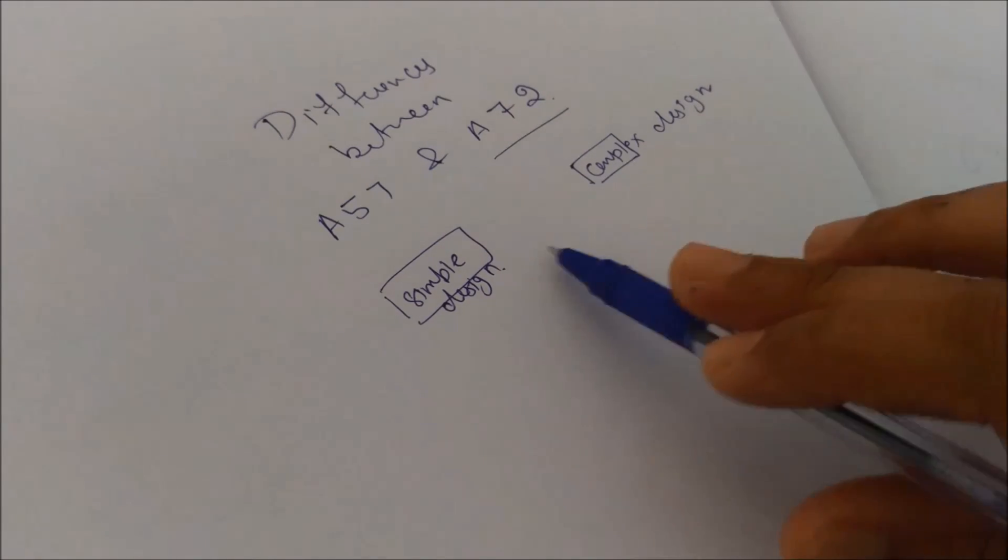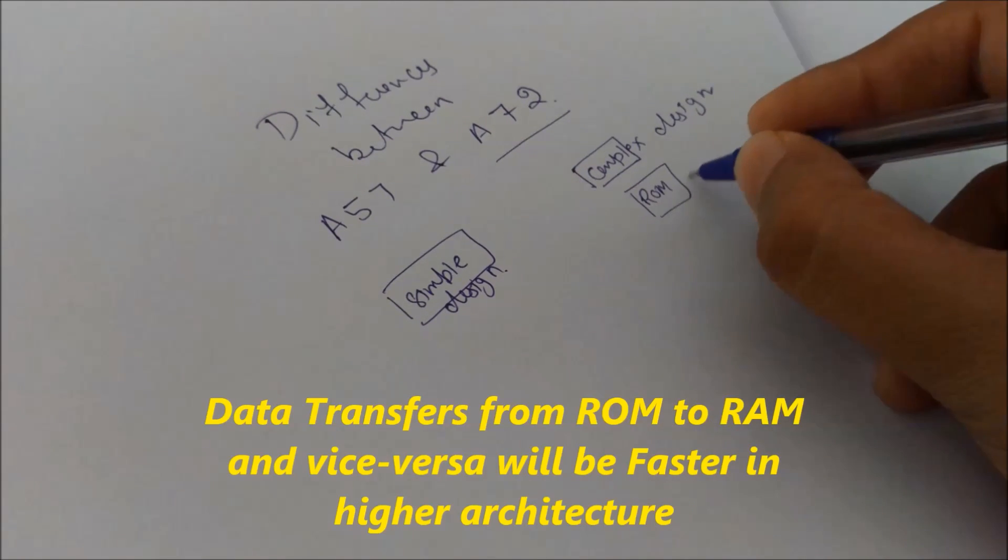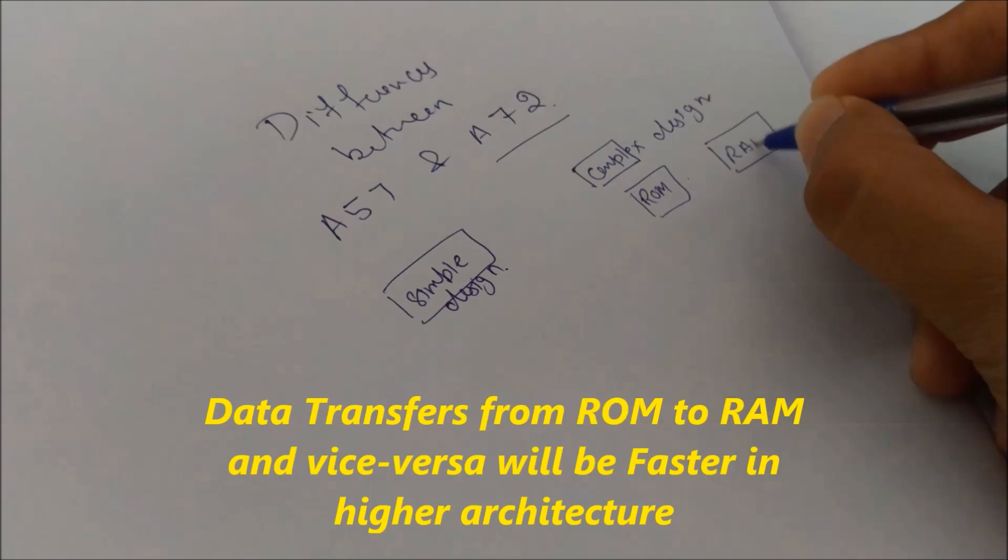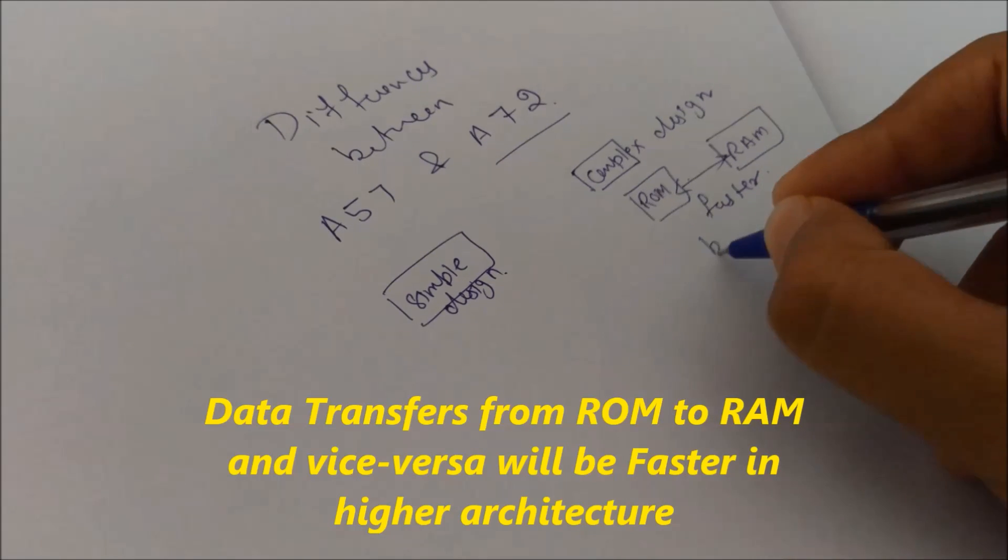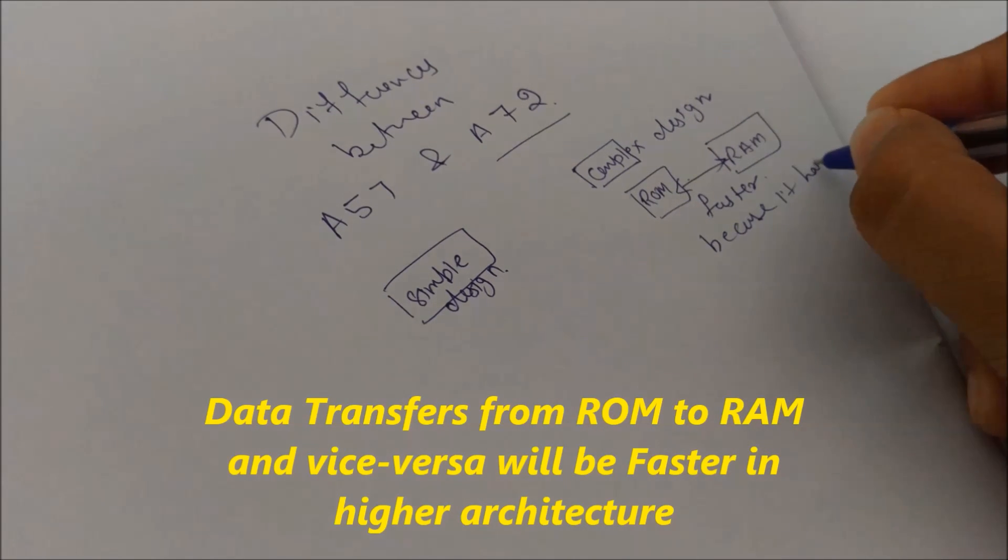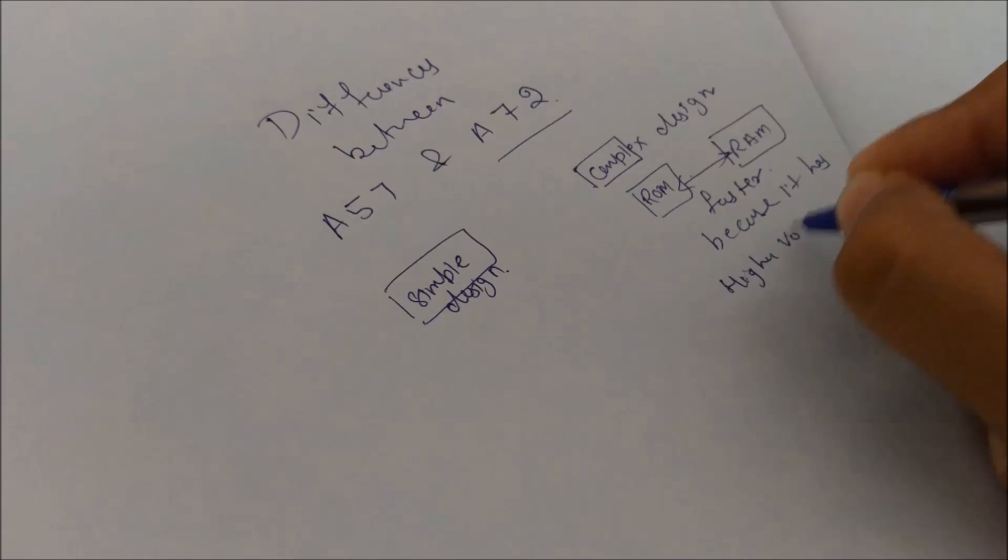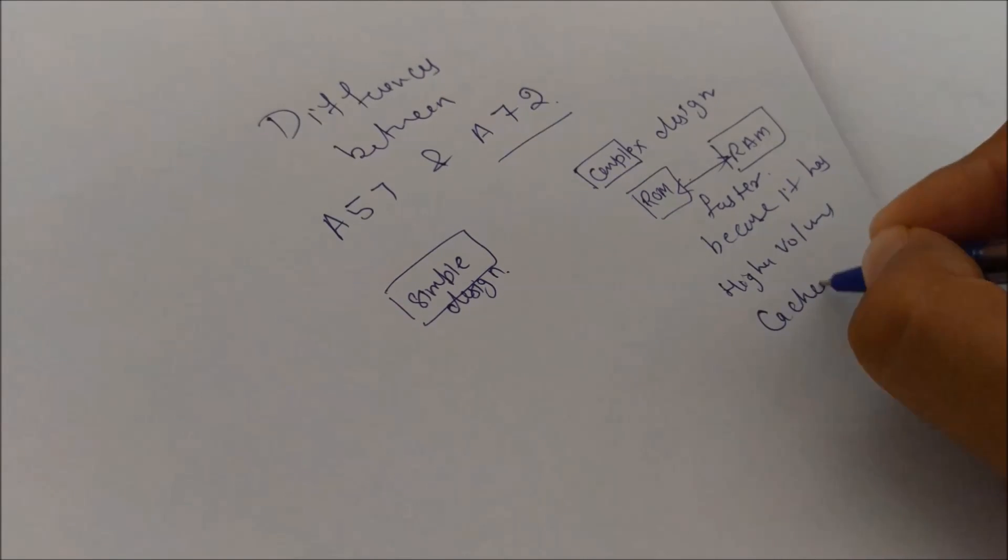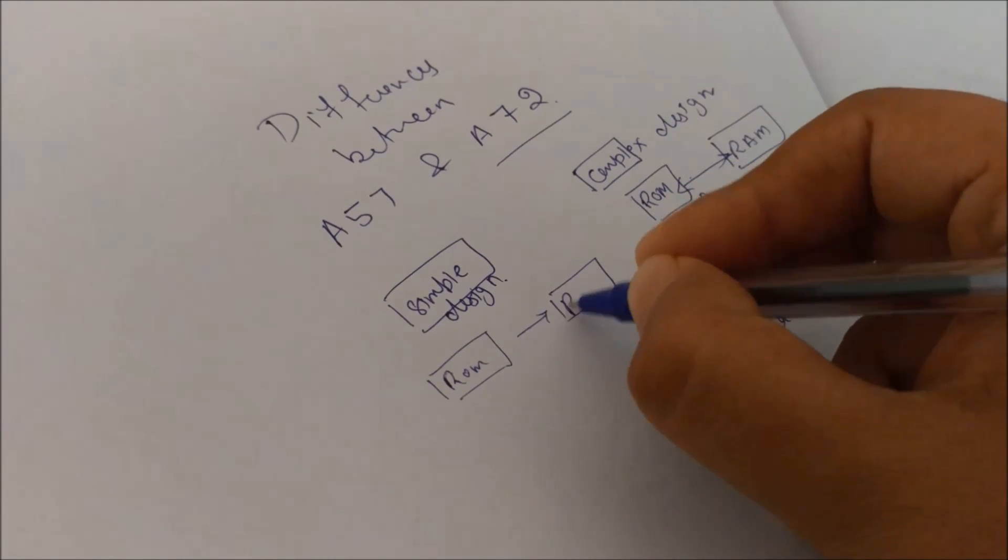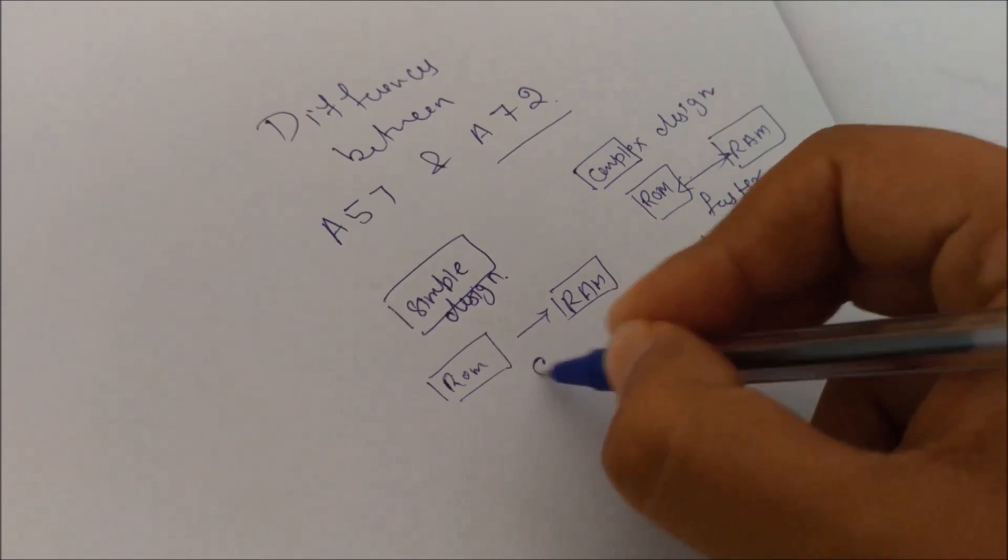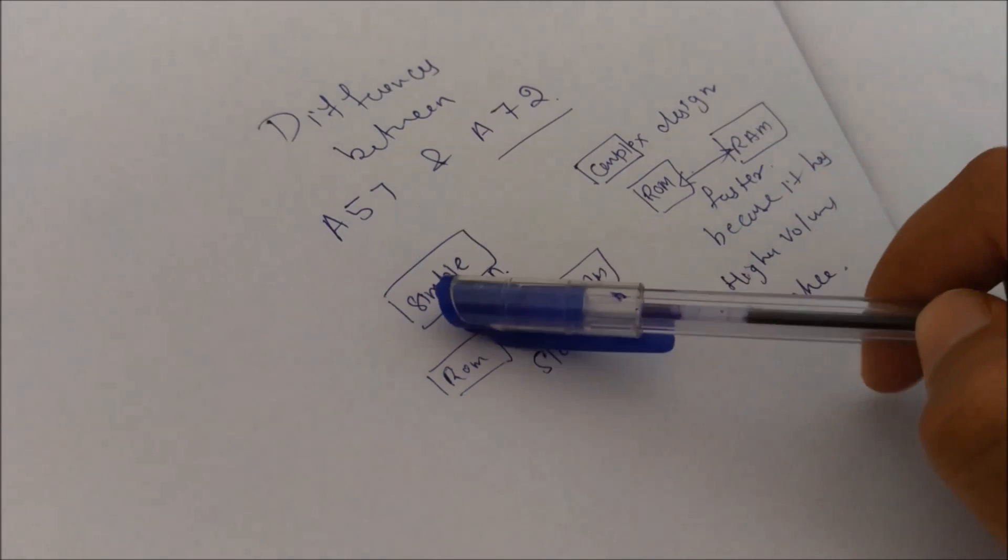What is meant by simple design and complex design is that data transfer from ROM to RAM is faster because it has a higher volume of cache available, and data transfer between ROM and RAM is slower. That's why the A72 will give you more power as compared to A57.